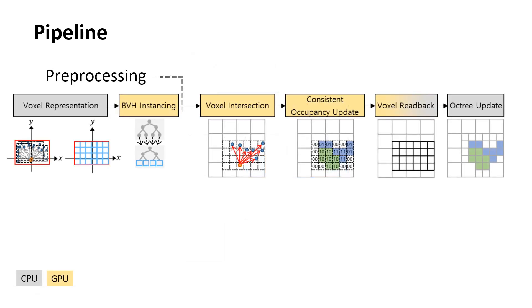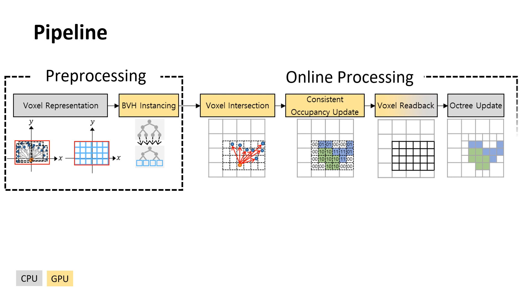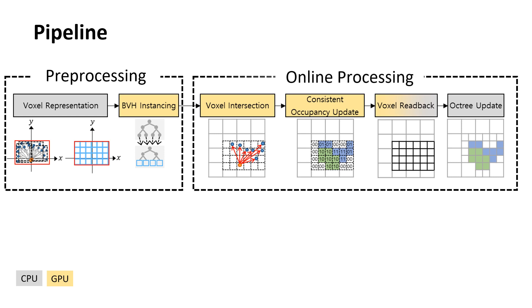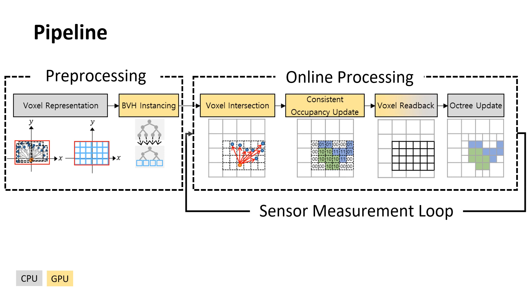Voxel representation and BVH instancing are done beforehand. Then the rest are repeated in real time as new sensor data is collected.